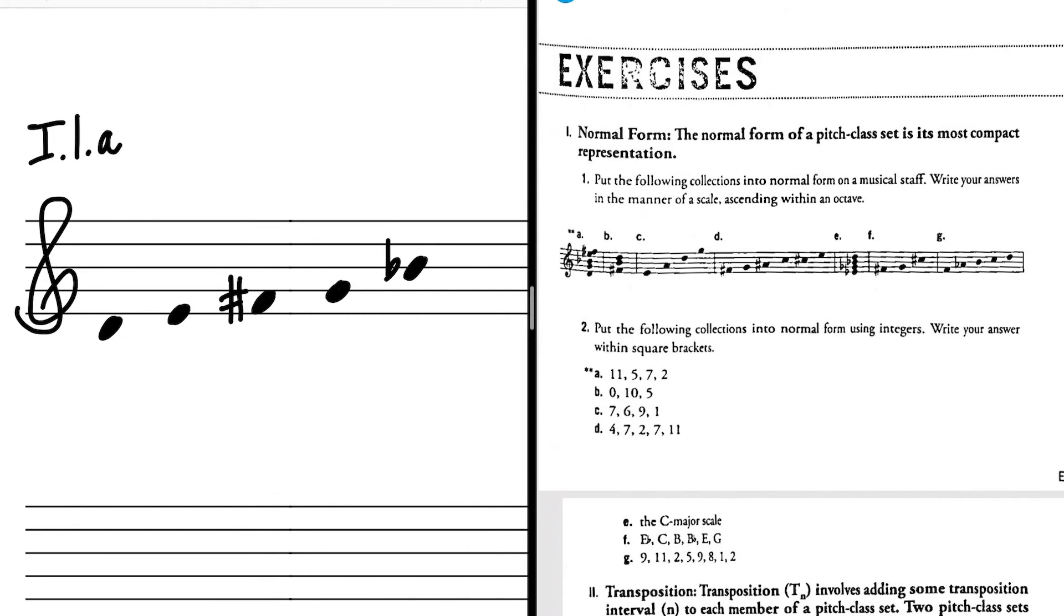Let's look at another example. Question 2 says, put the following collections into normal form using integers. Write your answer within square brackets. And again, let's try letter A. 11, 5, 7, 2.